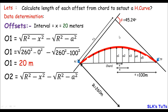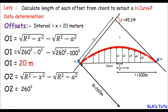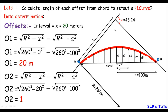For Offset 2, the same method applies with only x changed. The distance between Offset 1 and Offset 2 is 20 meters (our assumed interval). So O2 = √(260² − 20²) − √(260² − 100²) = 19.229 meters. Since this value is less than Offset 1, the curve calculation is correct.